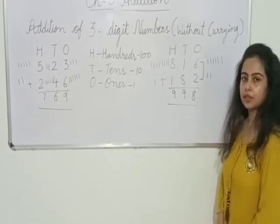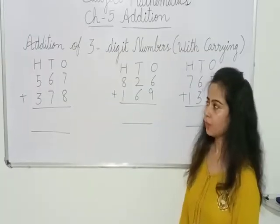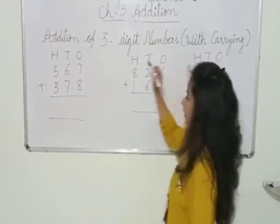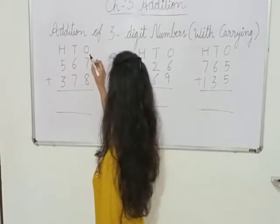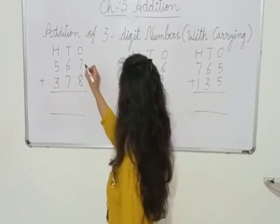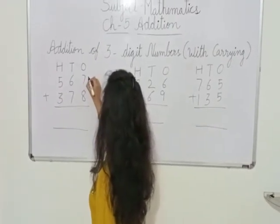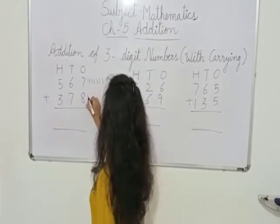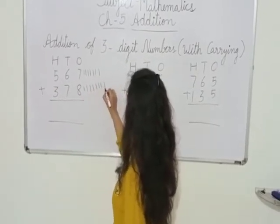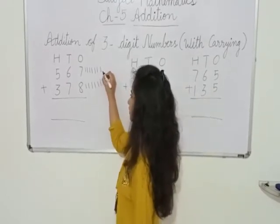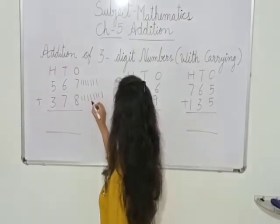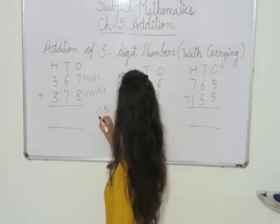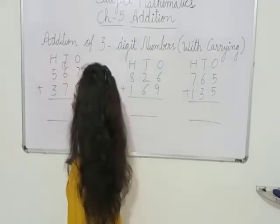Now let's move to another topic — how to solve addition of 3 digit numbers with carrying. So first we will write 7 plus 8. We draw 7 lines: 1, 2, 3, 4, 5, 6, 7. And we draw 8 lines: 1, 2, 3, 4, 5, 6, 7, 8. After 7, we count on: 8, 9, 10, 11, 12, 13, 14, 15. So here we have 15. We carry forward this 1 to the 10's place, and write 5 here at the 1's place.